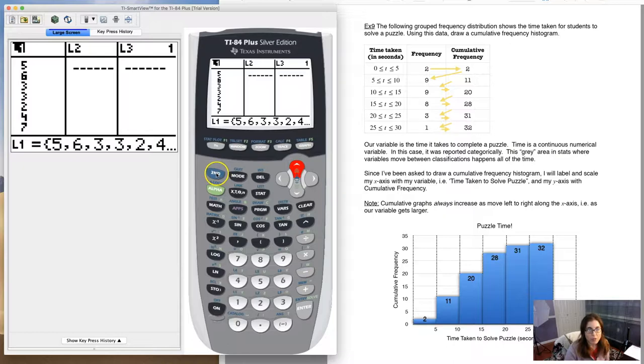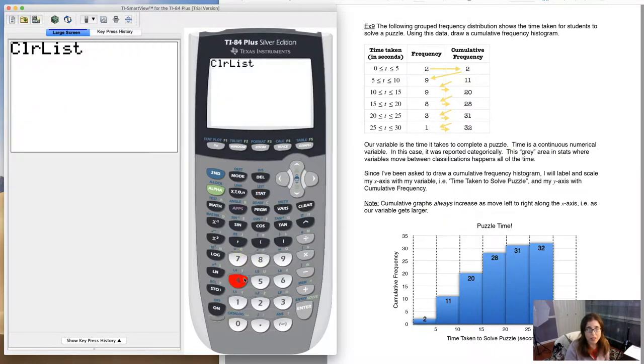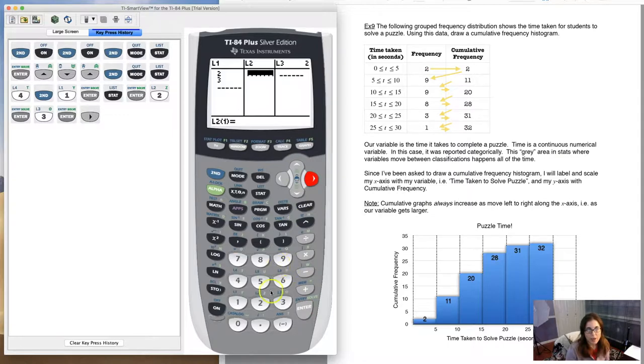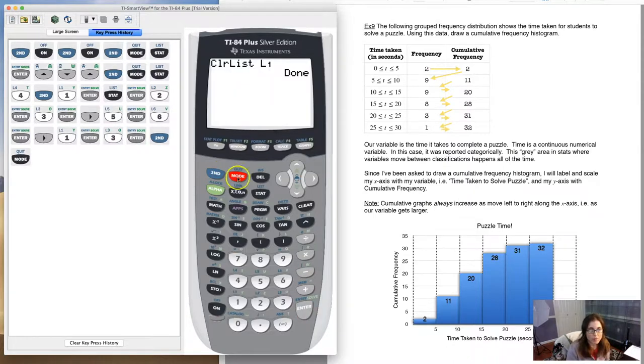I want to show you now a second way to clear out your lists. So here's a different option. If I go back to my home screen, if you hit stats, you have option four in this menu called clear list. So I can click on four. And then what I need to tell my calculator is which list would I like to clear out. So I can hit second and L1, clear that out. Now, if you wanted to clear out more than one list, you can do this.